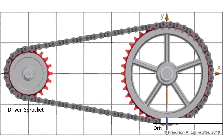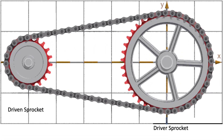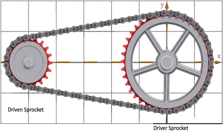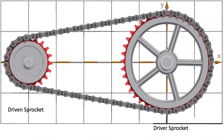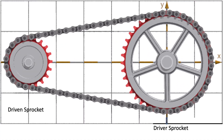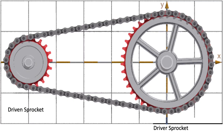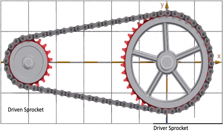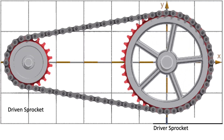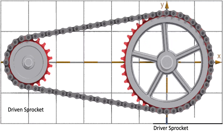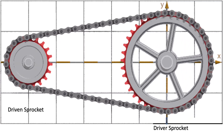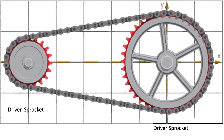The RPM, revolutions per minute, of chain sprockets on a machine varies depending on several factors, including the motor's RPM or driver's sprocket RPM, the gearing ratios, and the size of the sprockets. Here in this video is a general overview of how to calculate the RPM of the driver and driven sprockets.